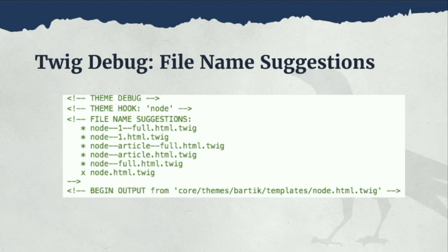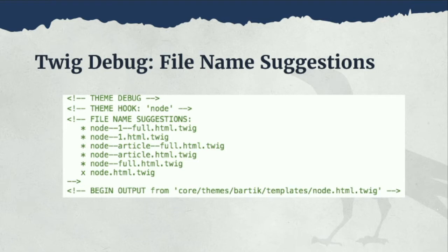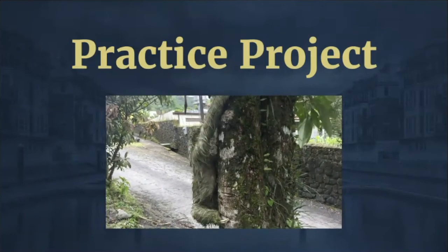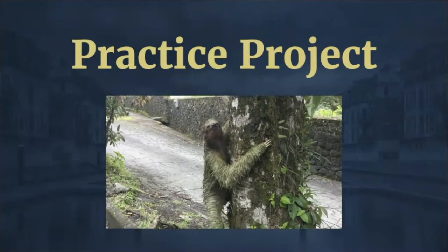If you look at "begin output" at the bottom, you'll see exactly which template file is being rendered. In this case it's coming from the core themes, Bartik, templates, and the file node.html.twig. The X on the left side of node.html.twig in the list indicates that this is the template being used. The order of file names is important — listed from more specific at the top to more generic at the bottom. Depending on the level of specificity, you can choose a file name that suits your needs, and Drupal will adhere to those specificity rules.